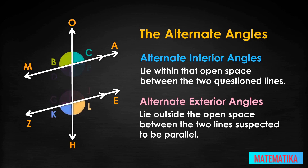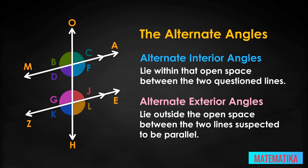Alternate angles appear on either side of the transversal. They cannot, by definition, be on the same side of the transversal. In our drawing, angle B is an alternate exterior angle with angle L. Angle D is an alternate interior angle with angle J. Can you find another pair of alternate exterior angles and another pair of alternate interior angles?